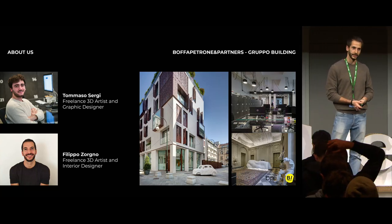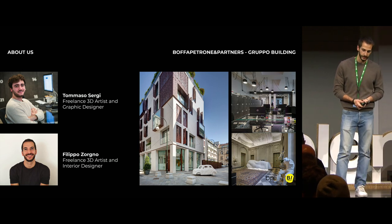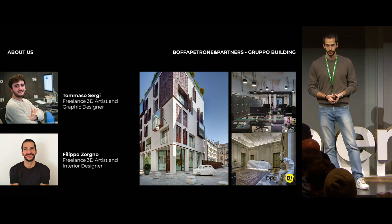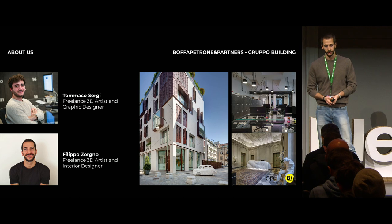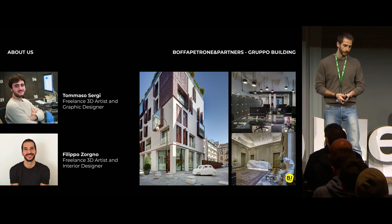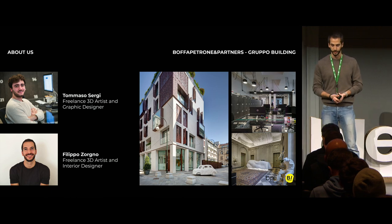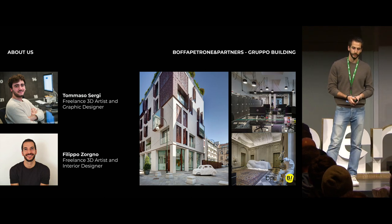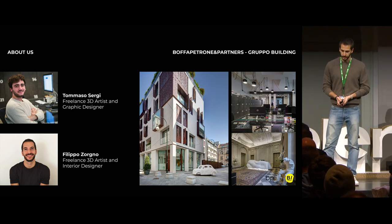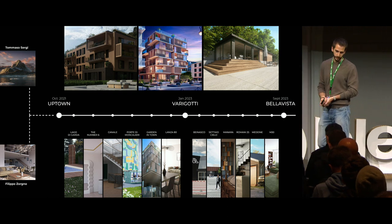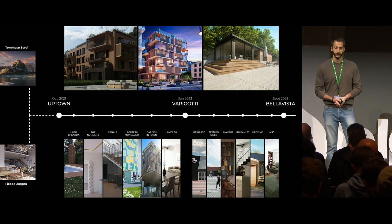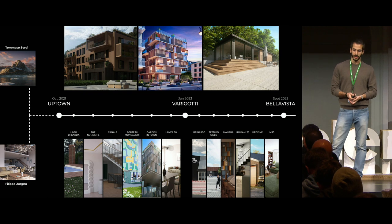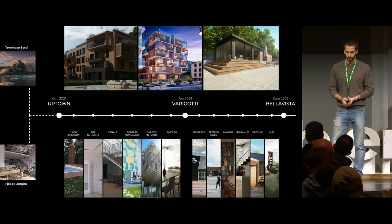We are both freelance studio artists with different backgrounds. Tommaso is a graphic designer and I'm an interior designer. In 2021-2022, we joined the studio, both patron and partners of Gruppo Building, an Italian architectural studio working in Italy between Turin and Milan, and in China as well. There, we had the opportunity to make our first ArcViz project — that was Uptown Torino. We made the first render for Uptown in 2021, and since then, as you can see, we made many projects with the studio and with other clients.